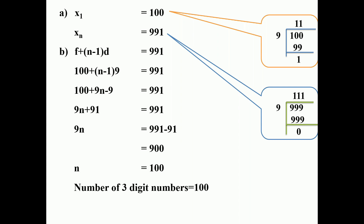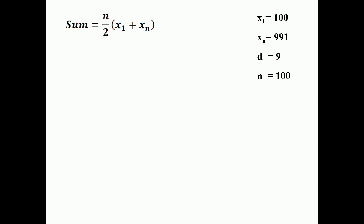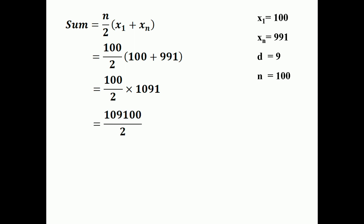Finally, the sum of all such numbers: with first term 100, last term 991, and 100 terms, the sum equals n by 2 into (first term plus last term) = 100 by 2 into (100 plus 991) = 50 into 1091 = 54,550.